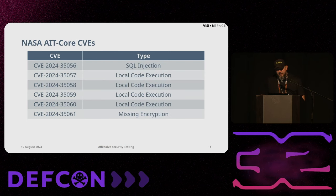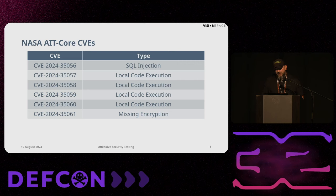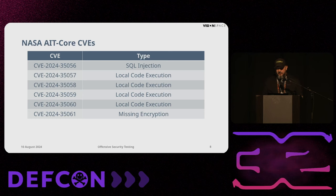On NASA AIT Core — which is a framework to develop ground segment software for different missions — we found SQL injection, a few local code executions, and also realized that the encryption in the communication is completely missing.